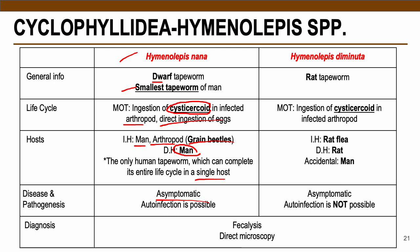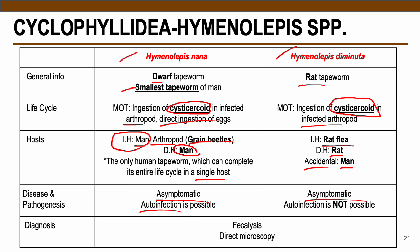For diagnosis, both H. nana and H. diminuta can be identified by direct microscopy. H. diminuta is the rat tapeworm. Both species' infective stage is the cysticercoid larva, acquired by ingesting infected arthropods. For H. nana the arthropod is the rat flea, acting as intermediate host; for H. diminuta, the definitive host is the rat and humans are accidental hosts. H. diminuta is also asymptomatic. Auto-infection is possible for H. nana since humans are the intermediate host, but not for H. diminuta since the rat flea is the intermediate host.